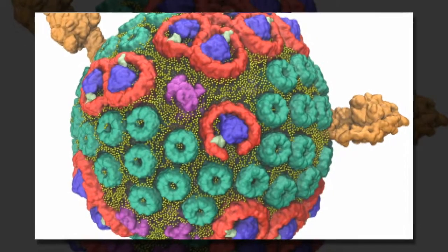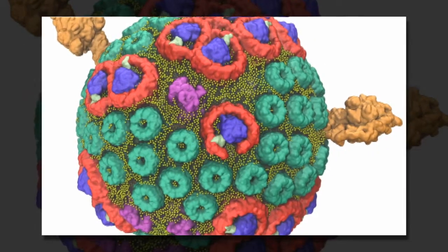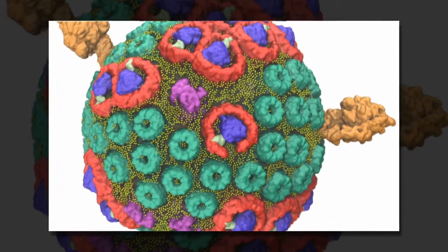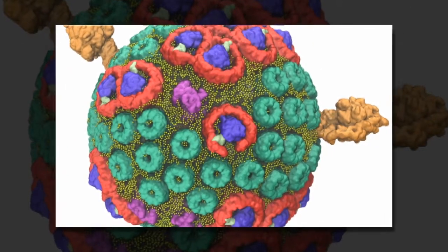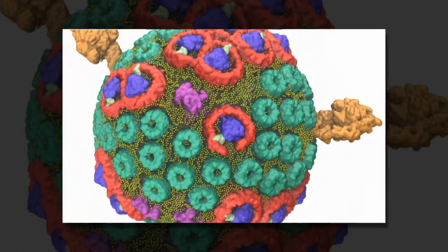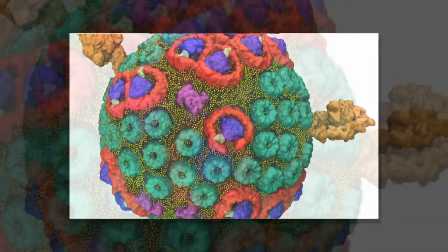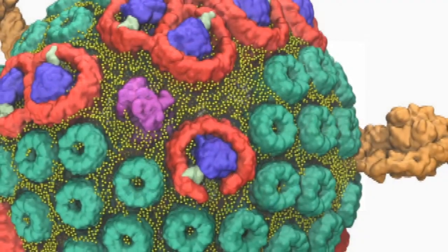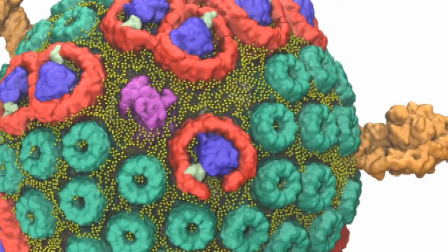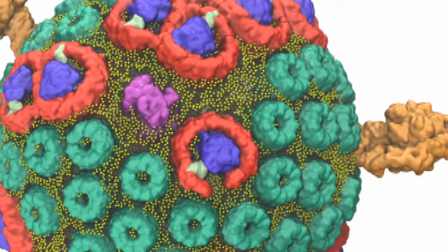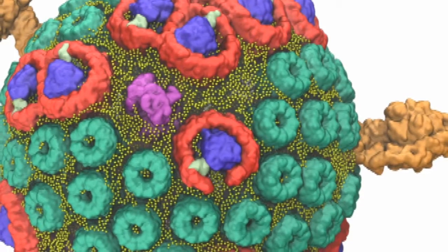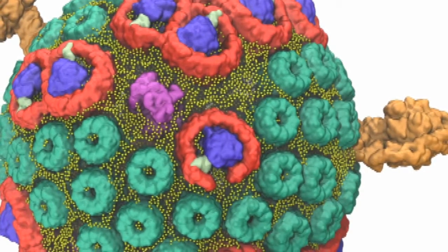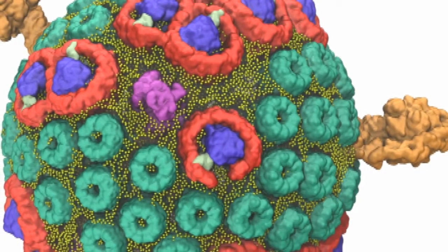Nearly all life on Earth depends on photosynthesis, the conversion of light energy into chemical energy. Oxygen-producing plants and cyanobacteria perfected this process 2.7 billion years ago.